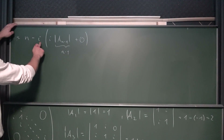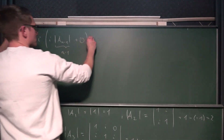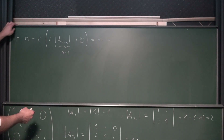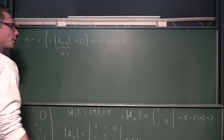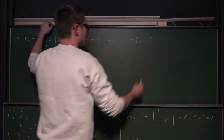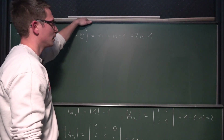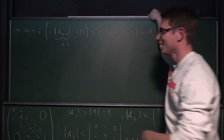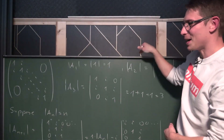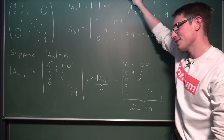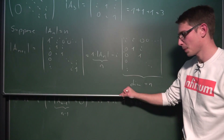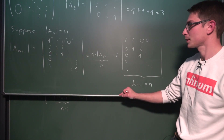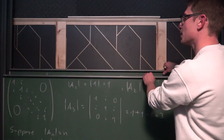So this gives us n plus n minus 1, which is 2n minus 1. But by induction we should have ended up with n plus 1. And n plus 1 is obviously not equal to 2n minus 1.